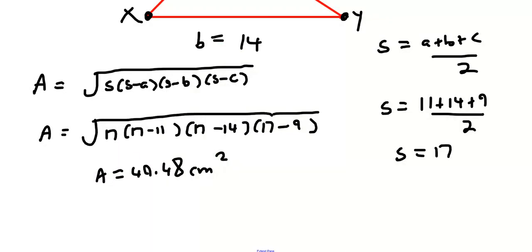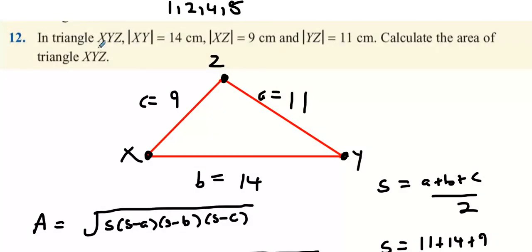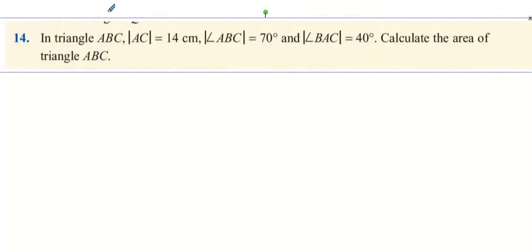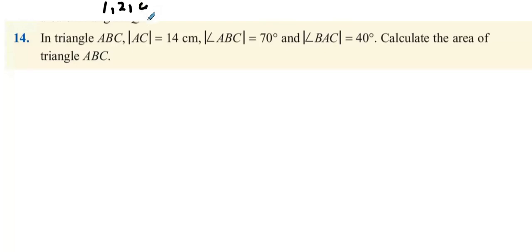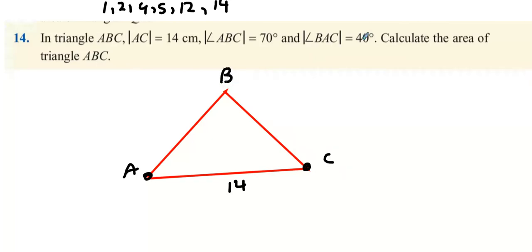The question wants me to calculate the area, so area is 49.48 centimeters squared. So that's 1, 2, 4, 5, and 12. Now I'm doing 14. In this triangle we have a triangle ABC, so I'm just going to write down generic sides a, b, and c.